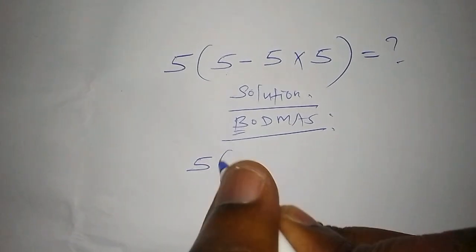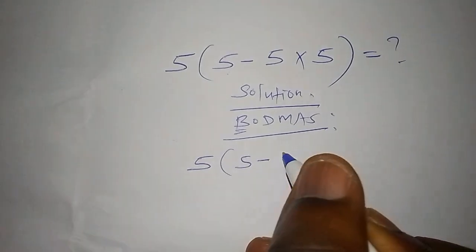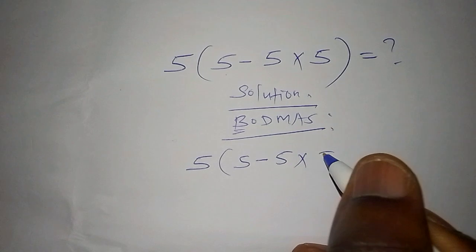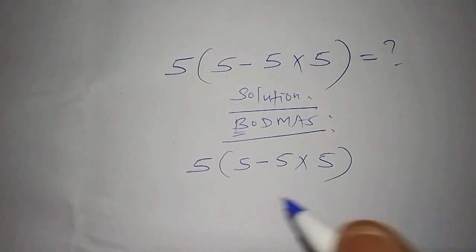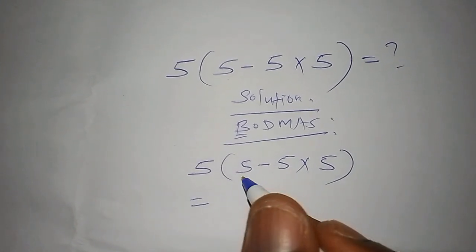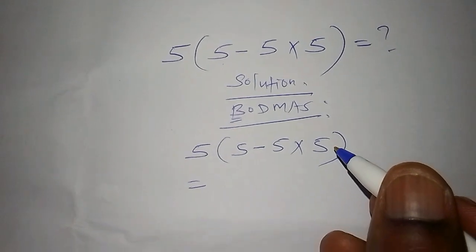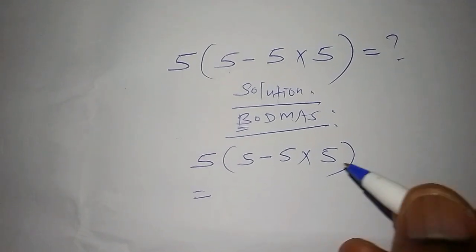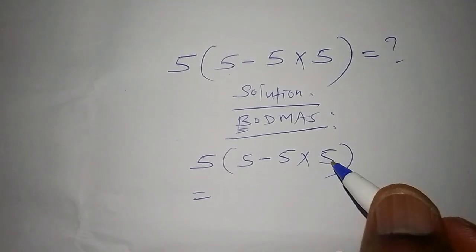It is 5 into bracket 5 minus 5 multiply by 5. The first thing that we're going to do is work out the number inside the bracket. When working out the number inside the bracket, the multiplication starts.